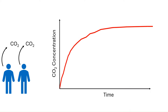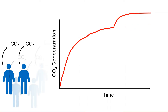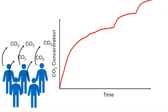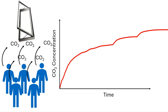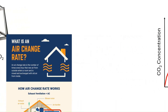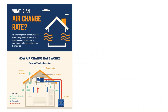If a second person enters the room, the CO2 concentration will increase again, reaching a new, higher steady state. This trend continues as more and more people enter the room. If the ventilation rate is changed, a new steady state will be reached. The ventilation rate is reported as air changes per hour — ACH for short. The higher the ACH, the lower the maximum CO2 and thus the lower the amount of infectious aerosol in the room.